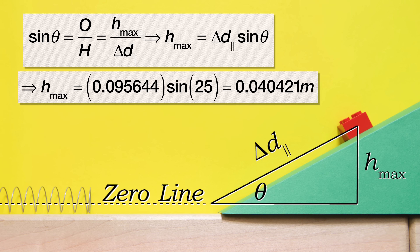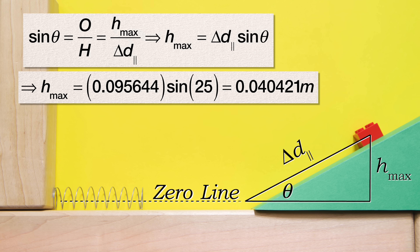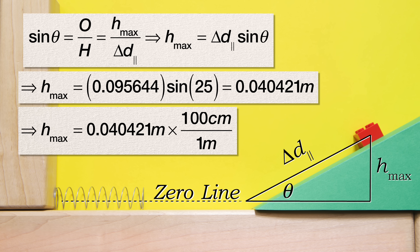However, let's convert it to centimeters. Multiply by 100 centimeters divided by 1 meter and with two significant digits, the answer is 4.0 centimeters.